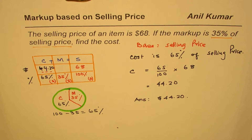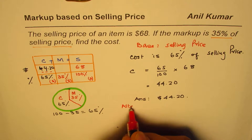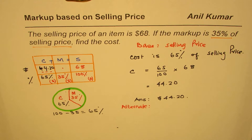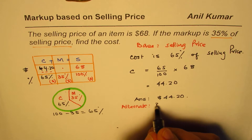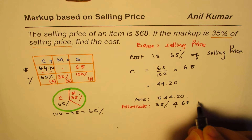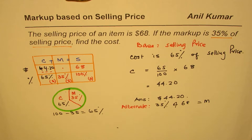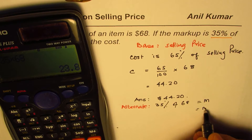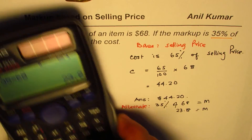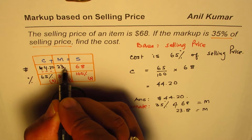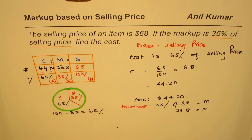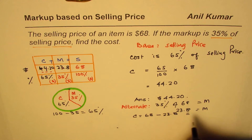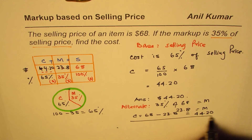Now here is an alternate method, which is actually simpler. Find 35% of $68, and take that away. So markup = 0.35 × 68 = $23.80. Since cost plus markup equals selling price, the cost price is 68 minus 23.80, which also gives us $44.20.